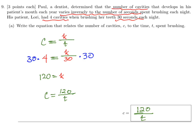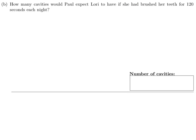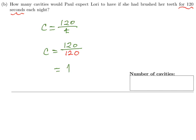In part B, it asks how many cavities would Paul expect Lori to have if she brushed her teeth for 120 seconds each night. Our equation is C equals 120 over T. If Lori brushes for 120 seconds each night, we plug that in for T and get C equals 120 over 120, which is one. So he can expect her to have exactly one cavity.